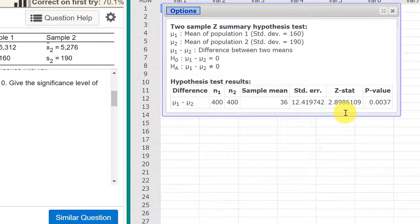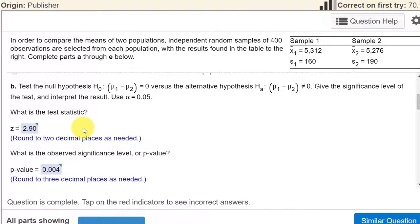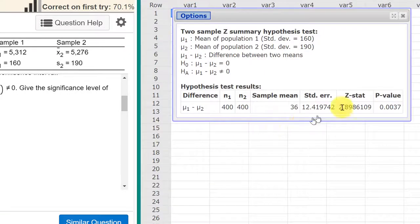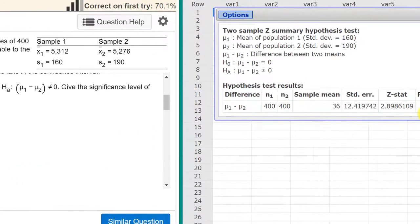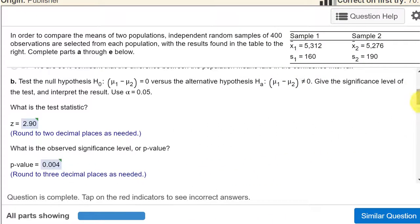And we get our answers here. We get that the Z statistic, which is also known as the standardized test statistic by most authors. Over here in the homework though it asks what is the test statistic. And they want the Z statistic or the standardized test statistic. We have 2.898, which rounds to 2.90, which is the answer they want there. They want the p-value, it's given here, .0037, which would round to three decimal places to .004. So that is pretty straightforward.